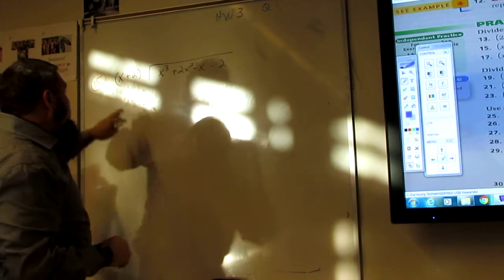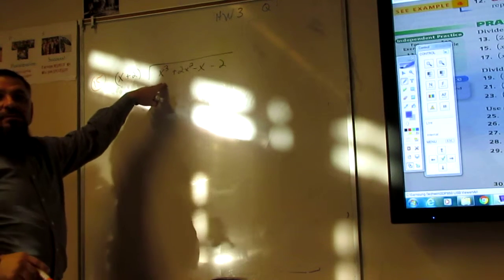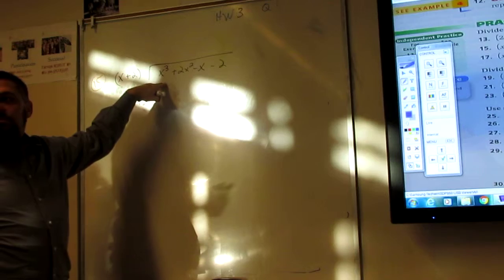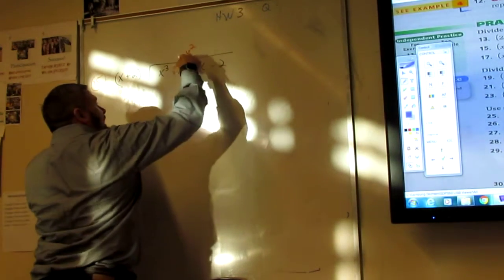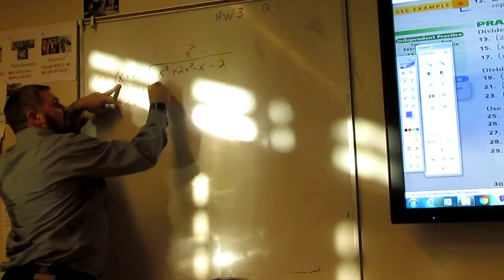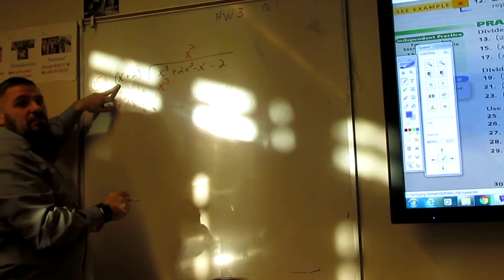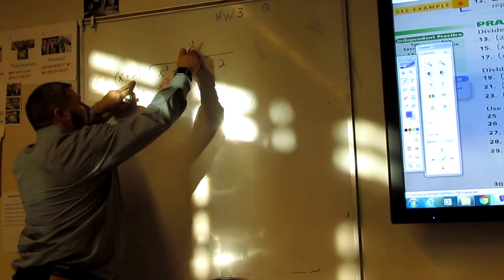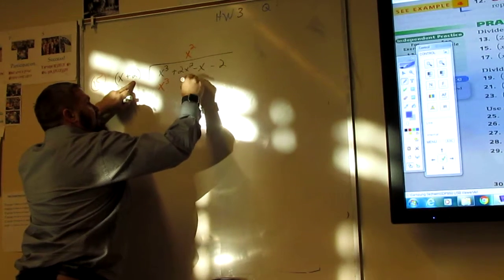So how do I turn an x into x cubed? X squared. So I put that in the x squared column. X squared times x is x cubed. X squared times 2 is 2x squared.